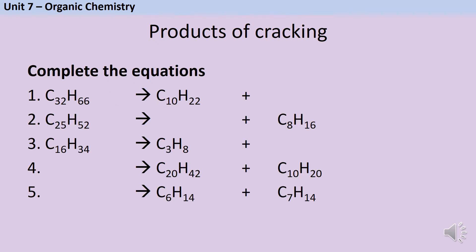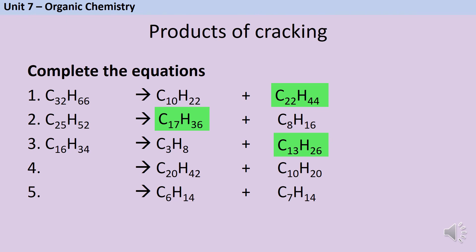Pause the video and complete each of these symbol equations. The product of the first reaction is C₂₂H₄₄, for the second reaction it's C₁₇H₃₆, for the third reaction it's C₁₃H₂₄, and the reactants for questions four and five are C₃₀H₆₂ and C₁₃H₂₈.